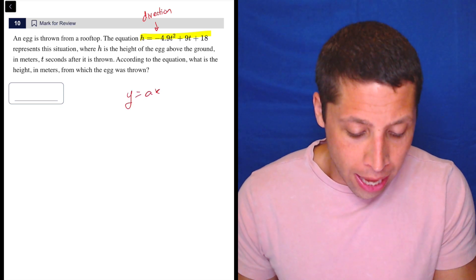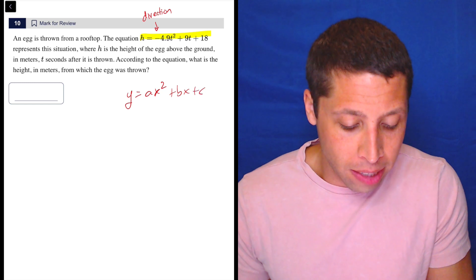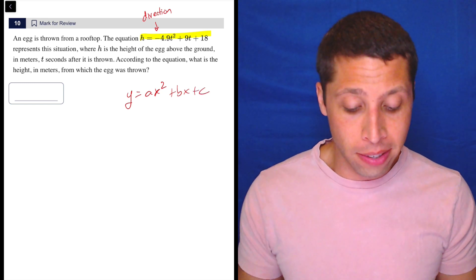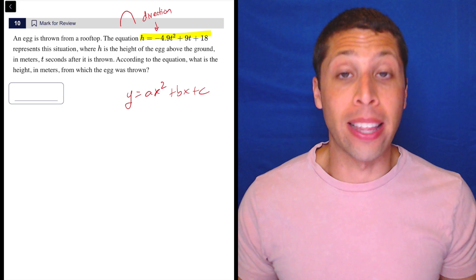The ax squared plus bx plus c, right? The a term tells us the direction. So, because this is negative, this is a parabola, it opens like this, it opens down.